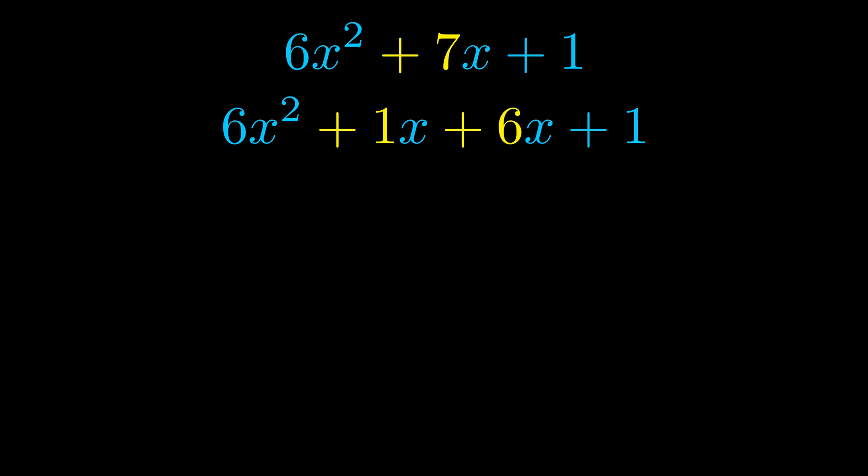Once we've done this we go ahead and we put parentheses around the first term and the last term. And we do that so that we can take the greatest common factor out of both terms.